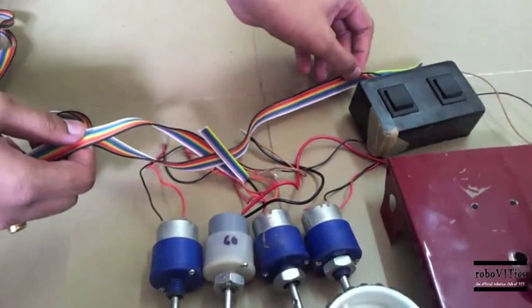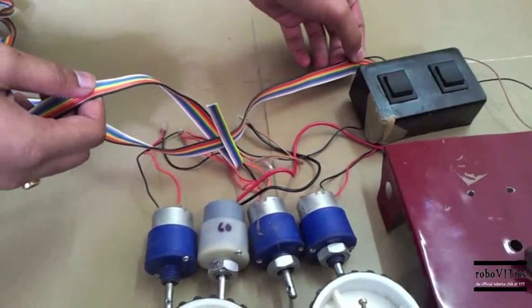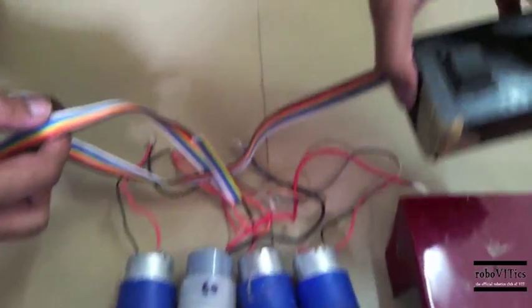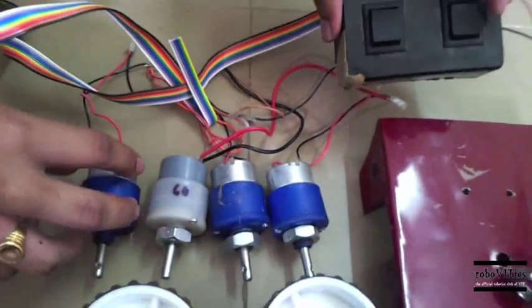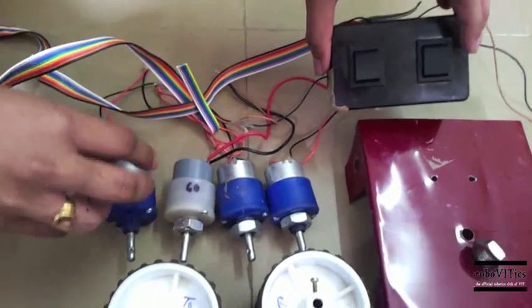They are brown, black, red and white. Now this is a DPDT box. Using this switch we will be controlling these four motors.